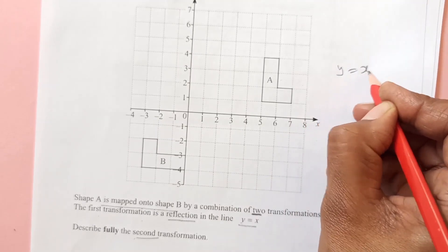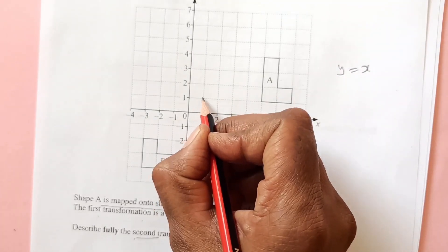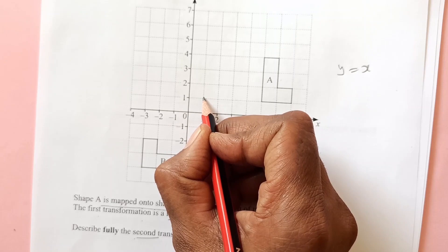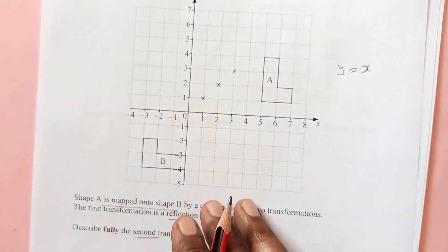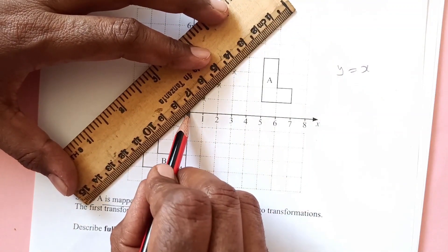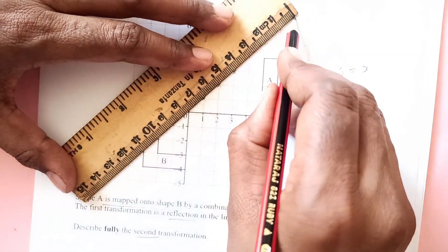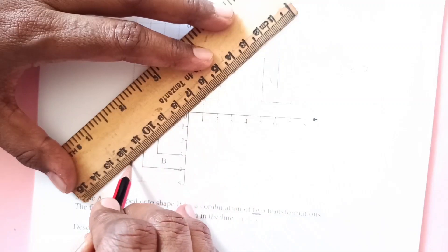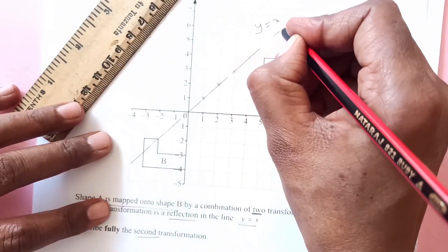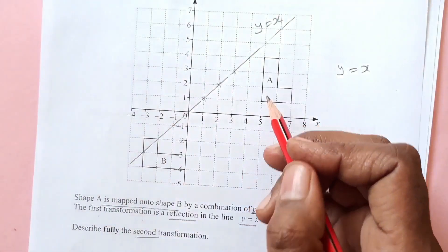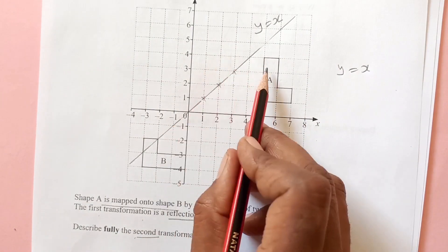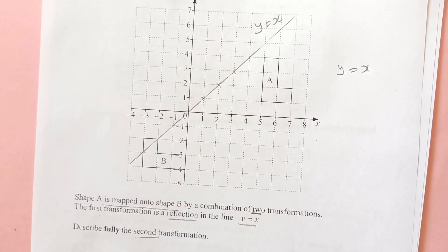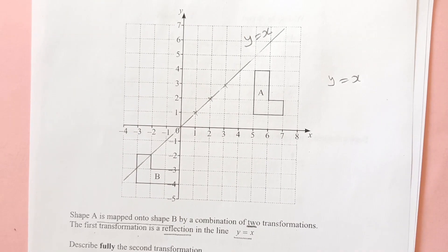The line y equals x means when x is 1, y is 1; when x is 2, y is 2; when x is 3, y is 3. So this is the line y equals x. When the shape is reflected in y equals x, it is going to come to this side.